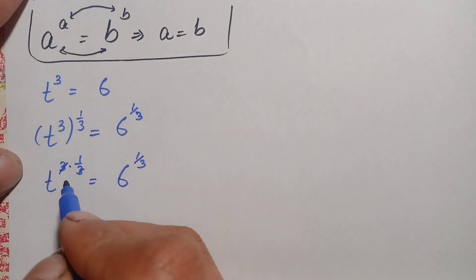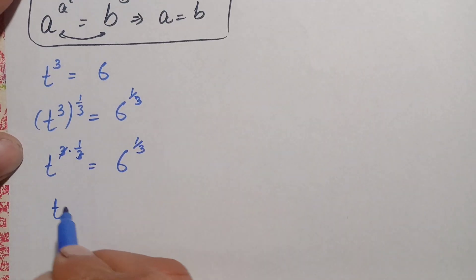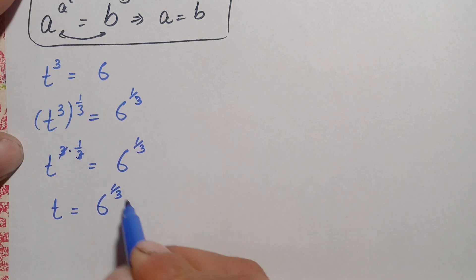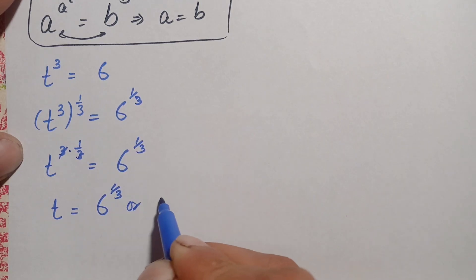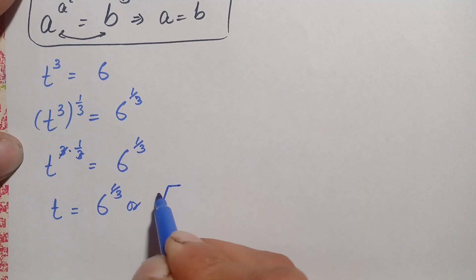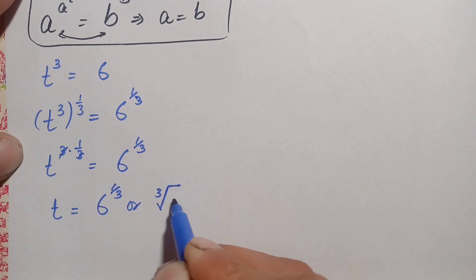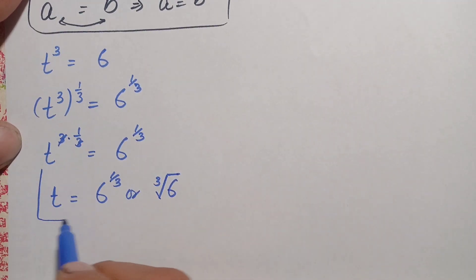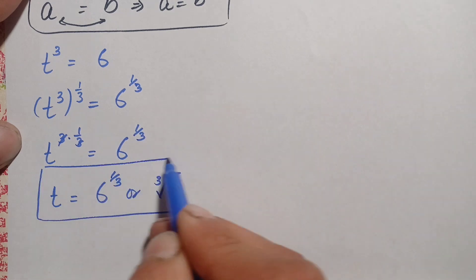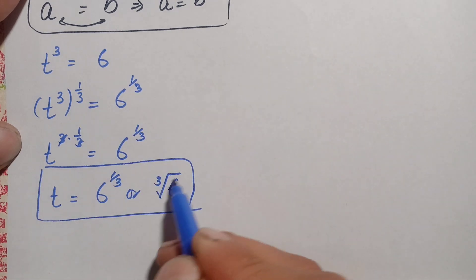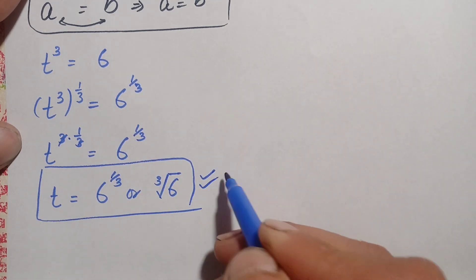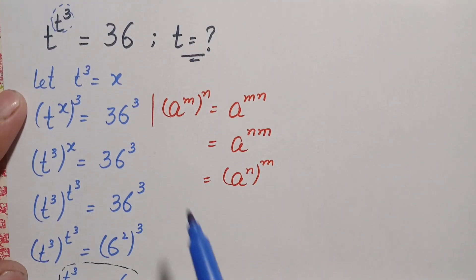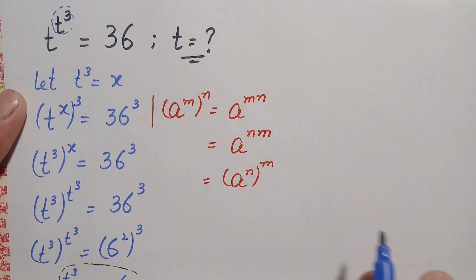The 3 and 1 over 3 cancel, leaving only t. So t is equal to 6 raised to power 1 over 3, or equivalently the cube root of 6. Finally, t equals 6 raised to power 1 over 3, or the cube root of 6, is our answer for the value of t in this exponential math problem.